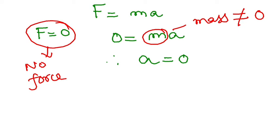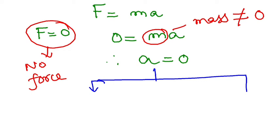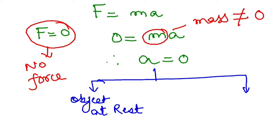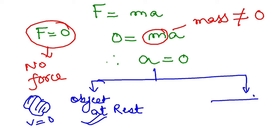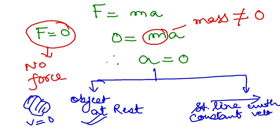The object has zero acceleration. This is very important — acceleration can be zero in two cases. One: if the object is at rest, then acceleration is zero. Two: the object can move in a straight line with constant velocity. For example, if an object is moving with v = 10 and maintains that same velocity of 10, there is no acceleration.